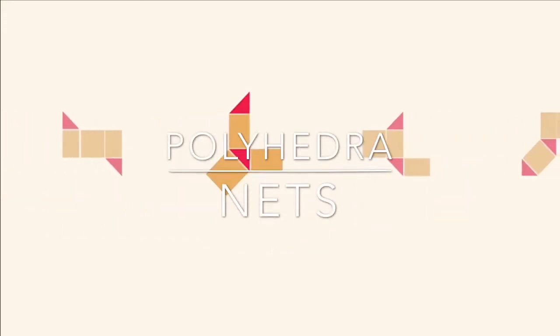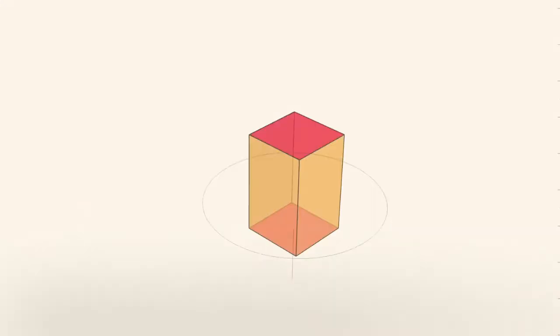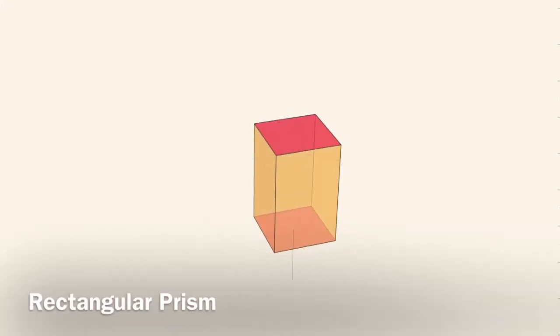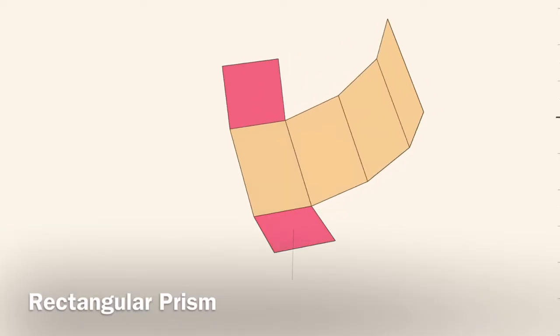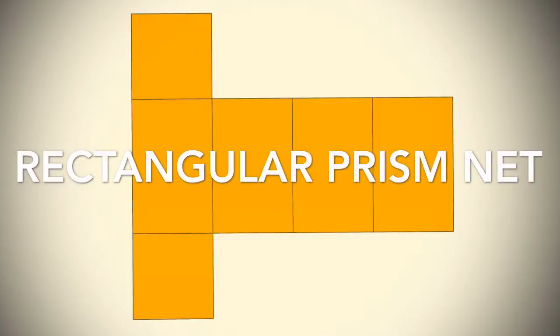Polyhedron Nets. Nets are when you take a 3D solid like this rectangular prism and you lay it flat so that its faces form one complex polygon like this rectangular prism net.